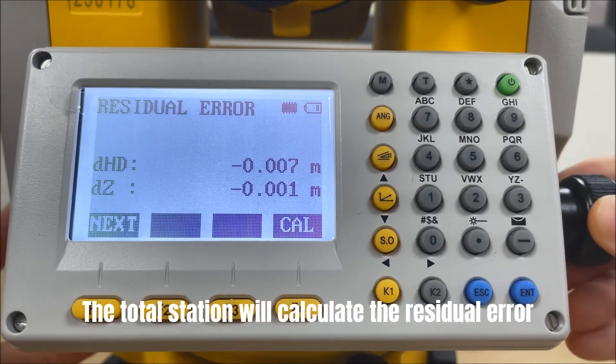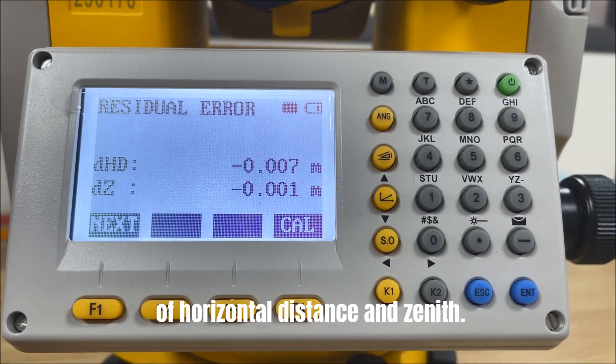The total station will calculate the residual error of horizontal distance and zenith.